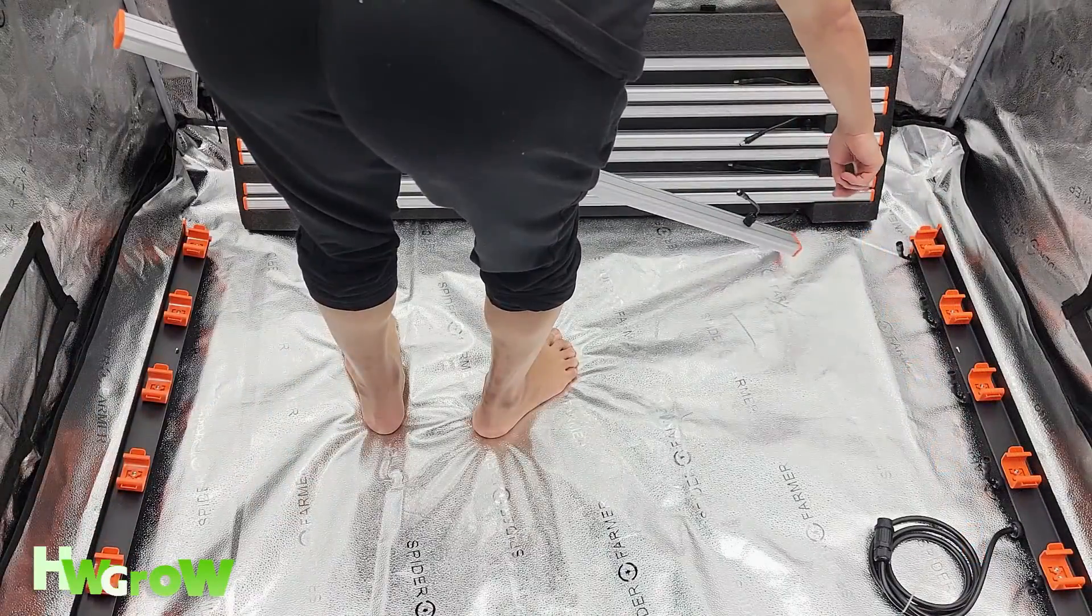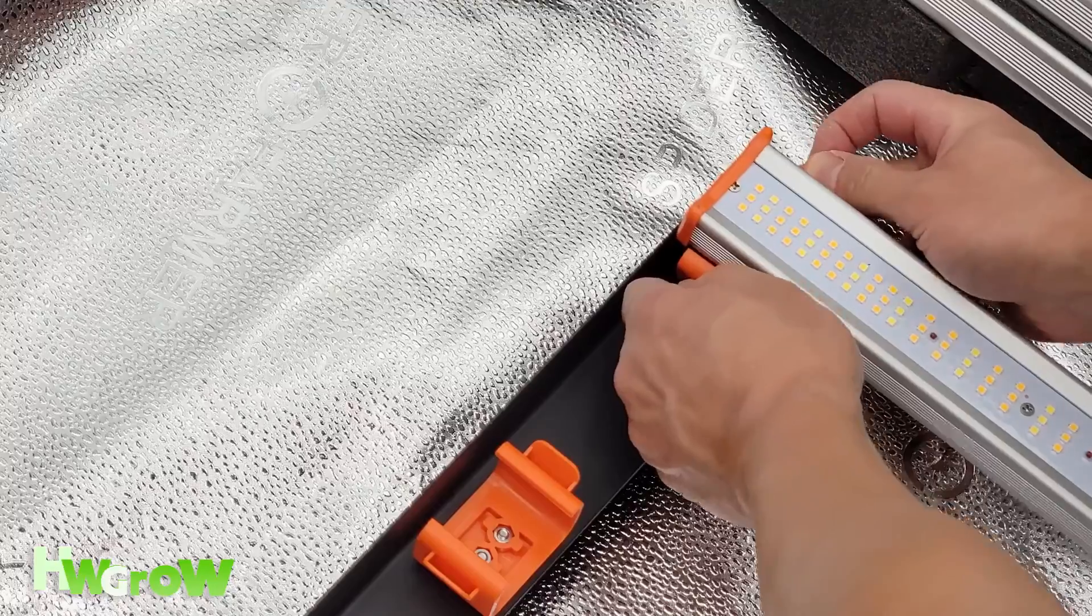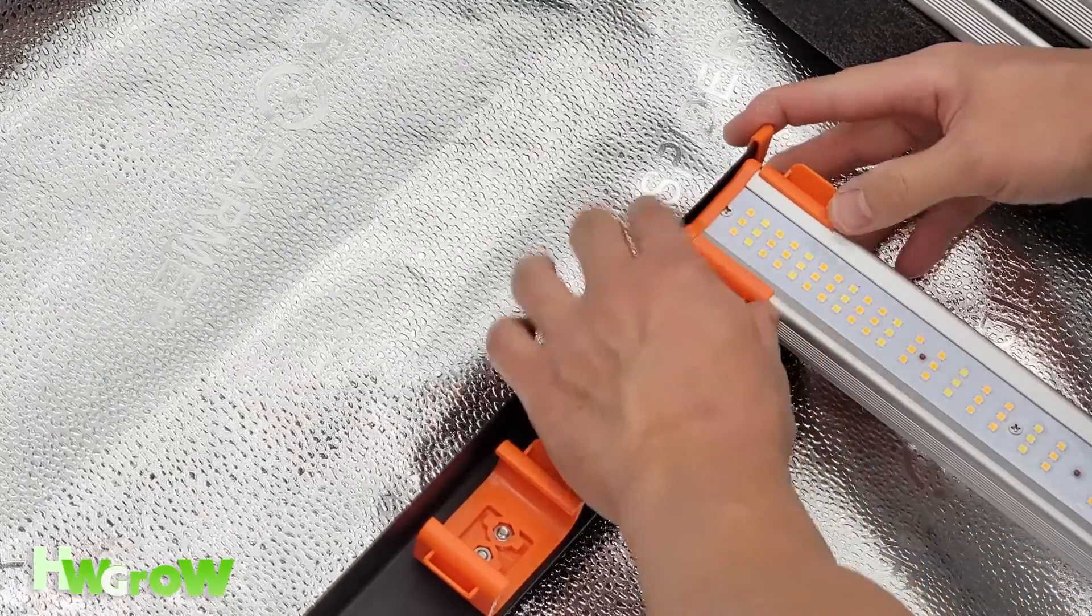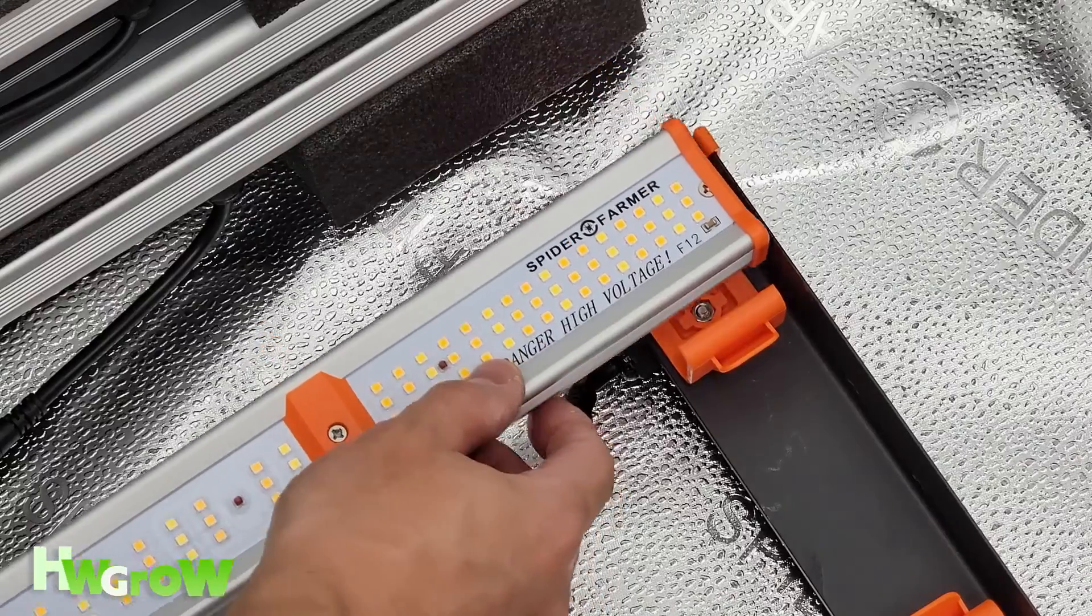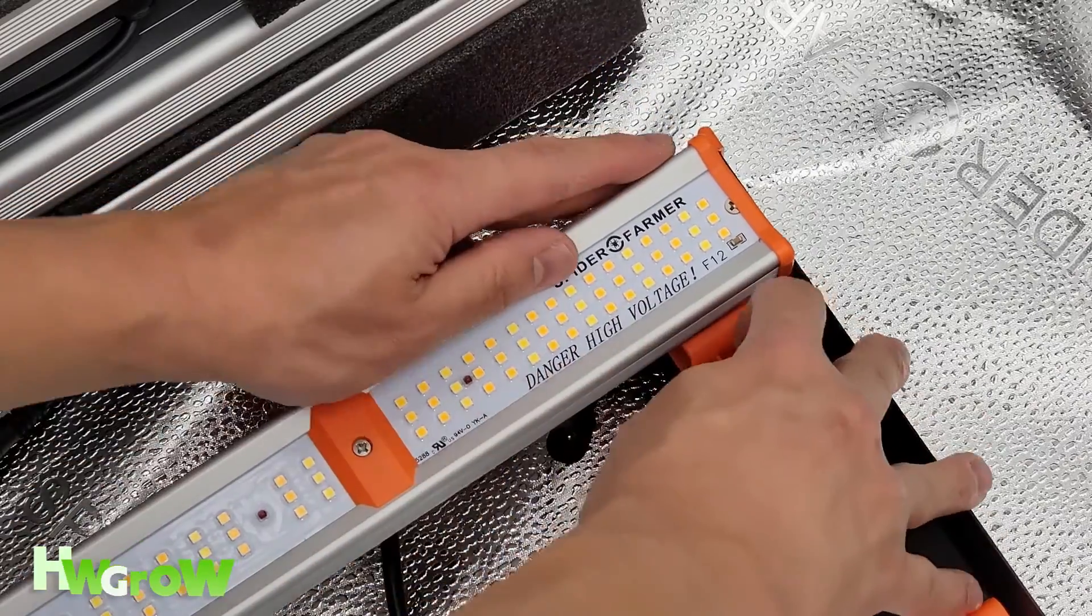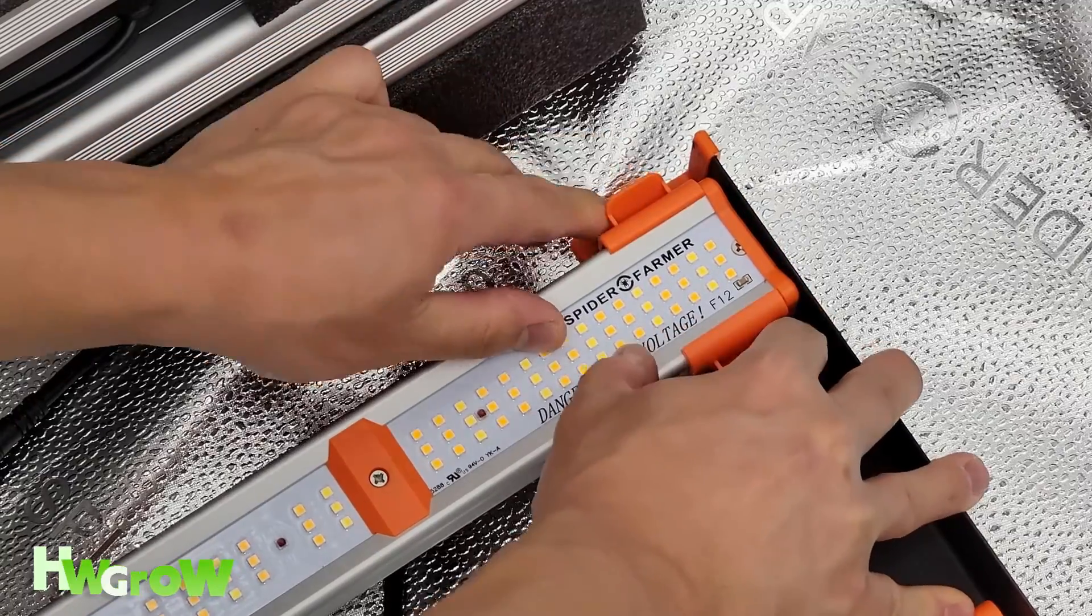Then connect each bar light by gently opening up the brackets and letting the bar light drop into the slot. Make sure each bar light is positioned so the Spider Farmer logo is on the same side which ensures the power lines being on that side.